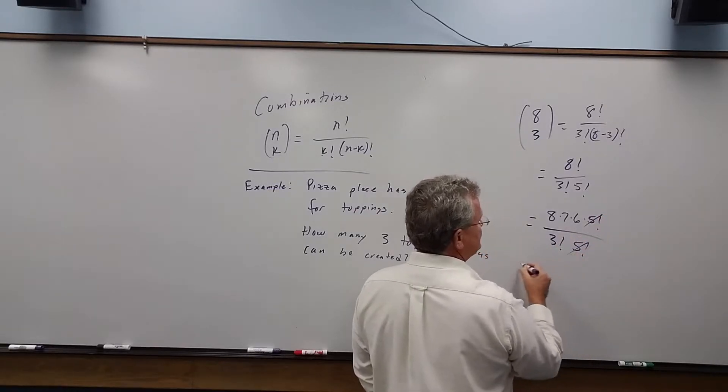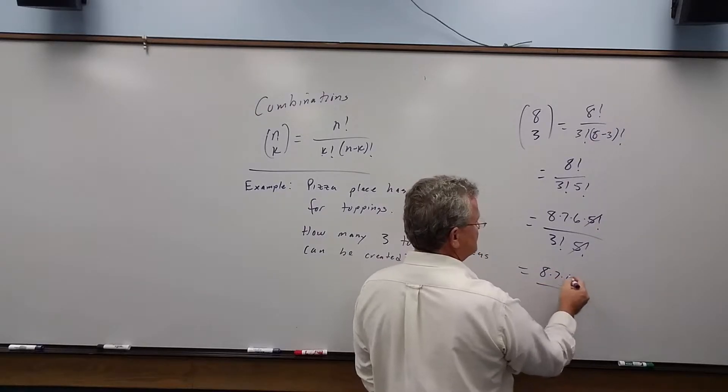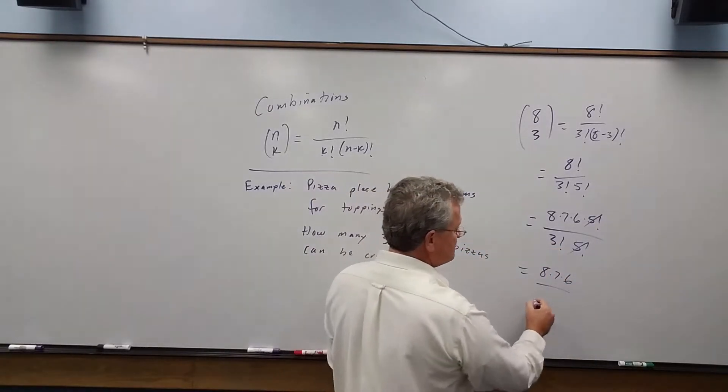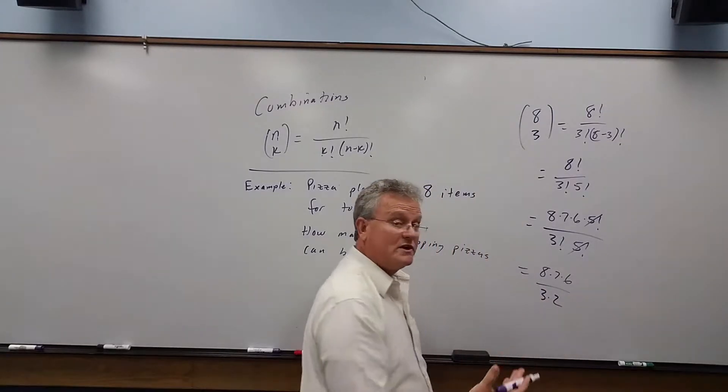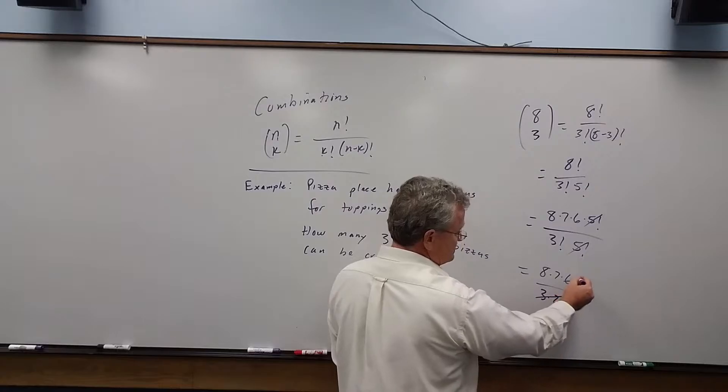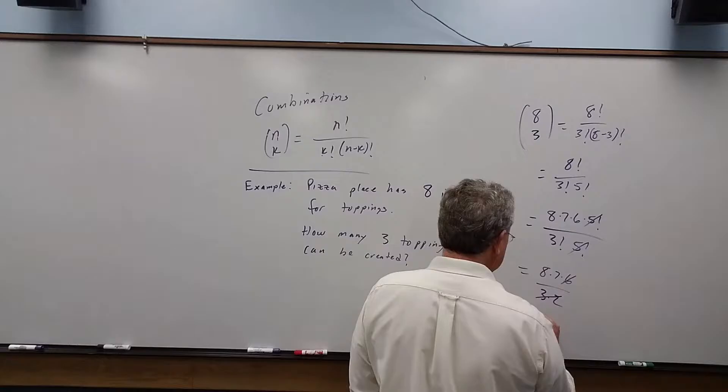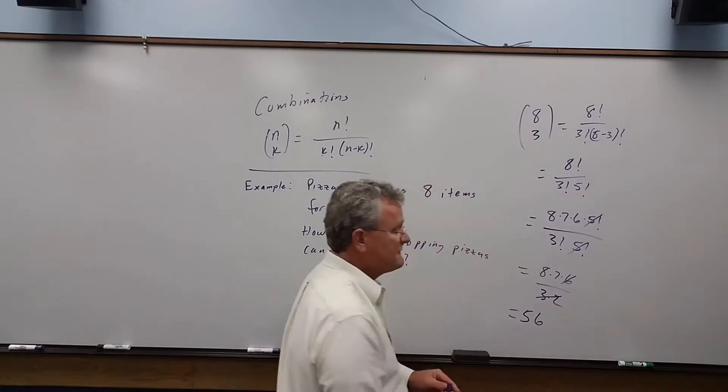These cancel, and we're left with eight times seven times six. Three factorial is three times two, which is six. Therefore, this six cancels with this six, and we get eight times seven, which is 56.